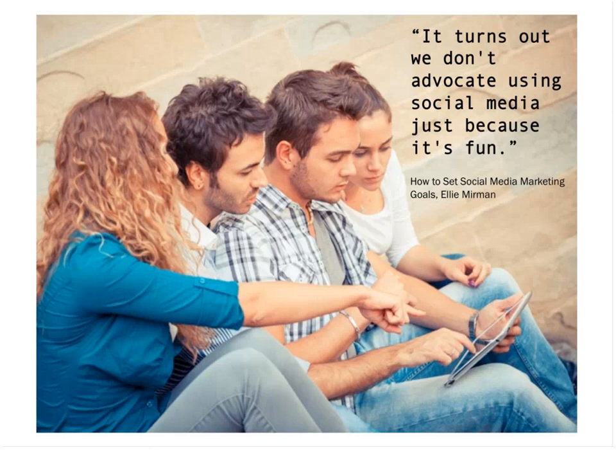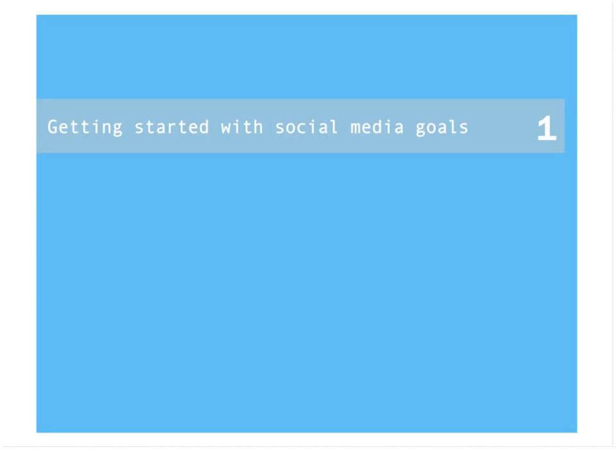As writer Ali Merman says in a recent HubSpot article, we advocate using social media because it drives significant business results for both us and our customers. So how many of us in arts organisations can honestly say we understand and can articulate what significant business results our social media activity drives for us? How do we begin setting social media goals that are meaningful, that prove the value of our investment, and ensure we are meeting milestones that will take us in the right direction?